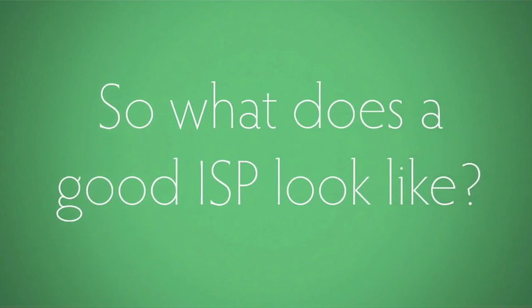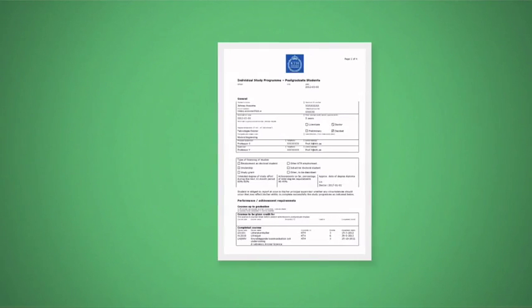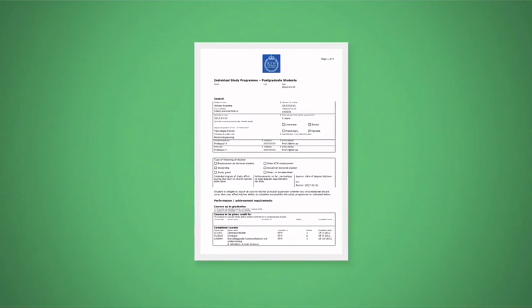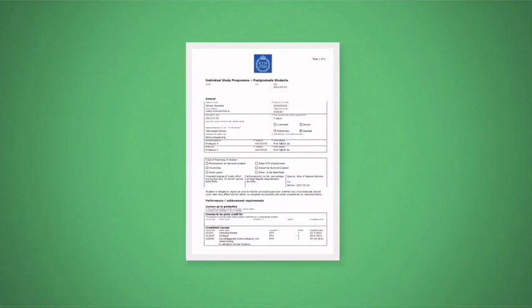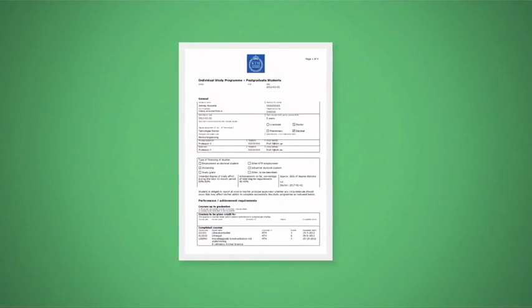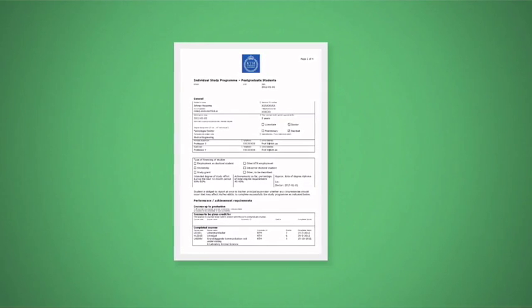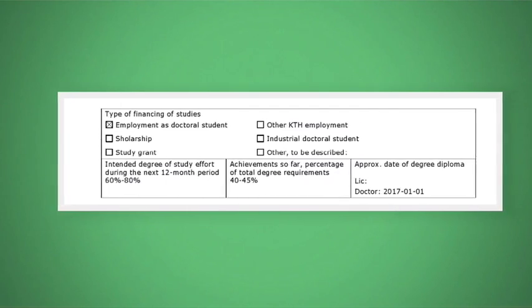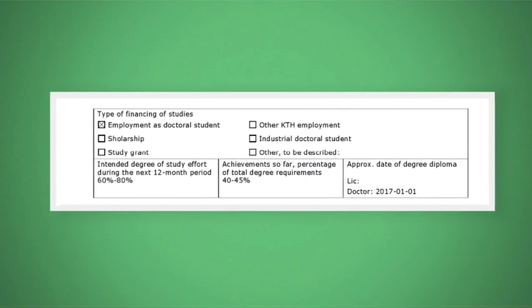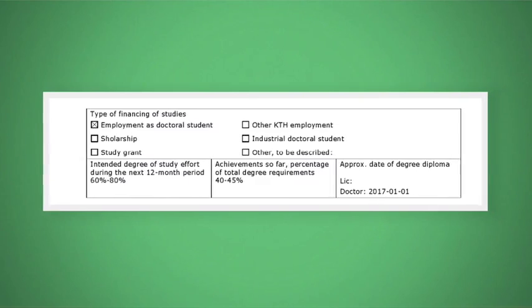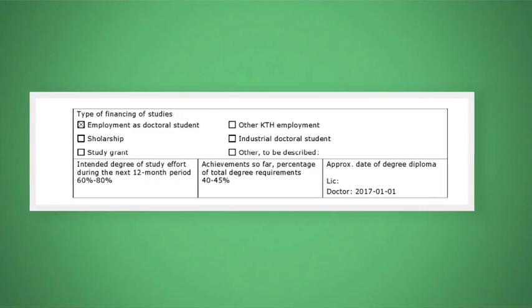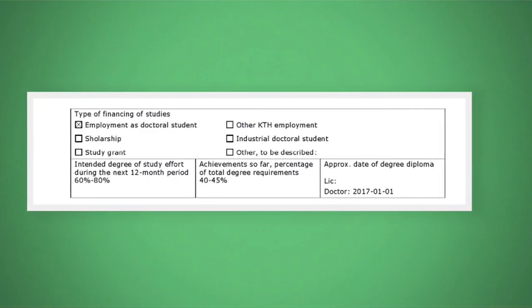So what does a good ISP look like? We are going to go through the most important parts of the ISP. It's important to remember that the ISP will vary greatly from student to student. However, here are a few tips that should help you along the way. The first important part is at the end of the general section, where it says how many percent you've completed of your degree so far. You can use the model from the PhD Chapter's website, and it's important that both you and your advisor are in agreement.